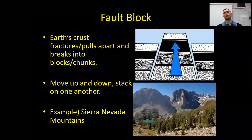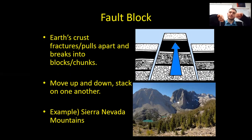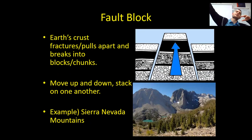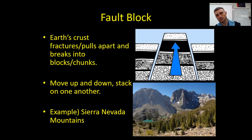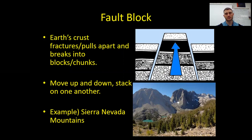The last mountain type of the day is fault block. In fault block mountains, the rock is not being bent — instead, rock is being pulled apart and broken into chunks, shuffled and thrown up into the sky. Fault block mountains can be a little wider and more consistent in shape, with blocks moving up and down and stacking. A great example is the Sierra Nevada mountains, unlike the Rocky Mountains and Himalayas which are folded. The earth's crust doesn't bend — it gets pulled apart and broken into blocks and chunks.